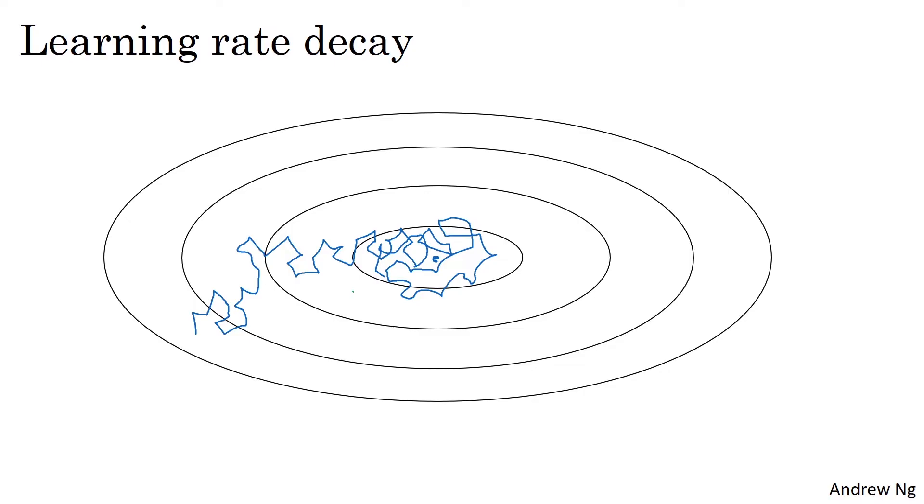But if you were to slowly reduce your learning rate alpha, then during the initial phases, while your learning rate alpha is still large, you can still have relatively fast learning. But then as alpha gets smaller, your steps you take will be slower and smaller. And so you end up oscillating in a tighter region around this minimum, rather than wandering far away, even as training goes on and on.